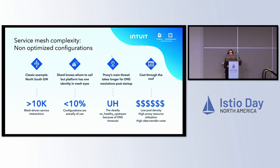Along with that, we started seeing another error called UH — which stands for No Healthy Upstream — and we started observing this when new gateway pods were coming up. Because we were fanning out so many Istio clusters to the gateway proxy, some of them were not getting resolved by the time the Istio proxy actually got ready and started receiving requests. Those resulted in 503s with the UH response flag.